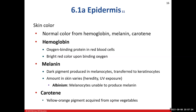Some people's melanocytes aren't very active — I, for example, am light-skinned, quite pale. In the condition of albinism, the melanocytes are there, they're just not making melanin. We'll see in certain people they don't have any melanin production going on at all.